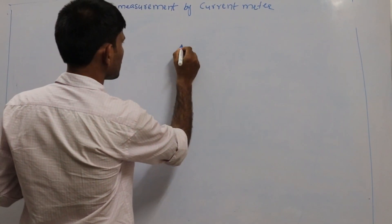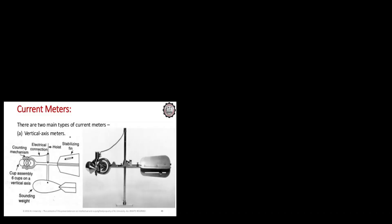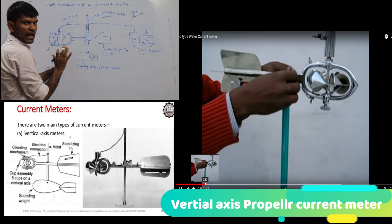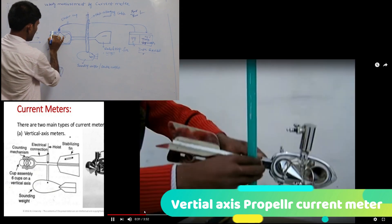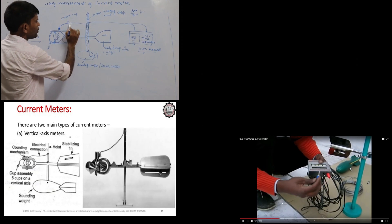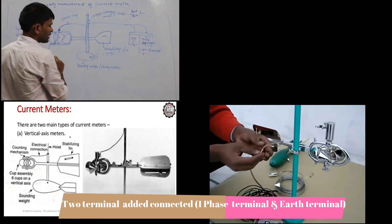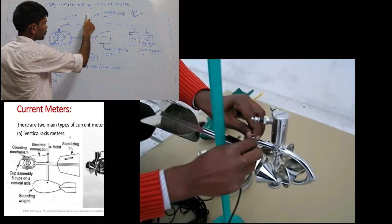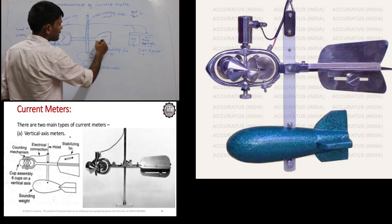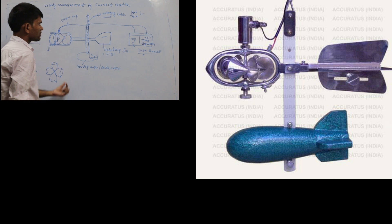Now I am drawing the current meter. This is a vertical axis current meter. This is the impeller. For measuring the rotation of the impeller, we will attach one cable for the data recorder. It will record the revolutions of the impeller — how many times it is rotated. This is your vertical shaft, and this is your stabilizing fin. This is your sounding weight or counter weight for maintaining the balance of this instrument.